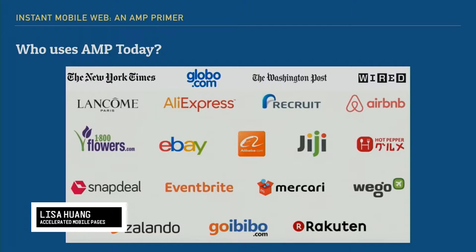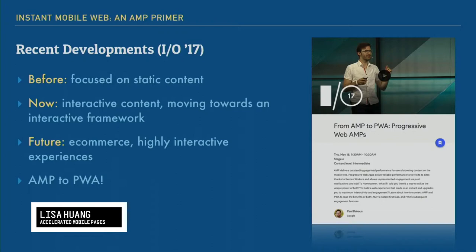So you can definitely feel confident going forward. It's been around two years, and from Google's perspective, they actively promote it at Google I/O and other events, so there's definitely a lot of support. The most recent development — announced in May, just a month ago — is a huge move into making more interactive content and user interactivity. They're expanding into sectors like e-commerce, travel, and retail, moving AMP from static websites to something with user interactivity. They also talk about moving toward progressive web apps.